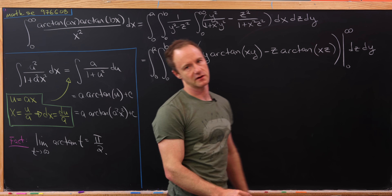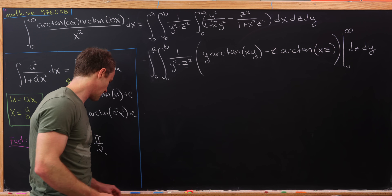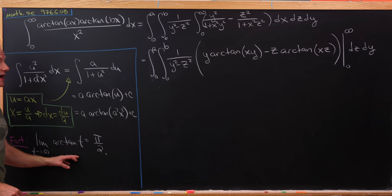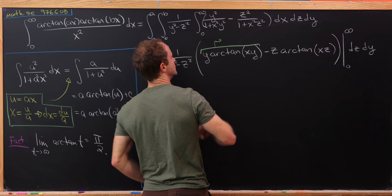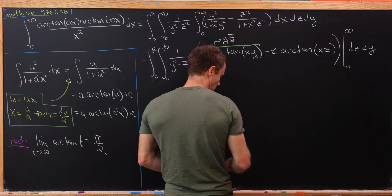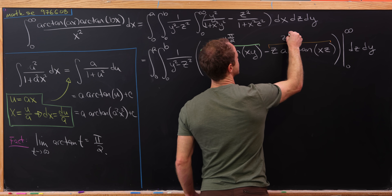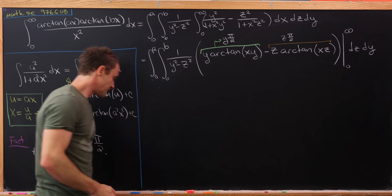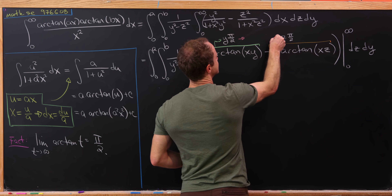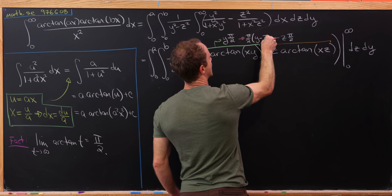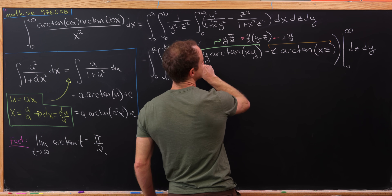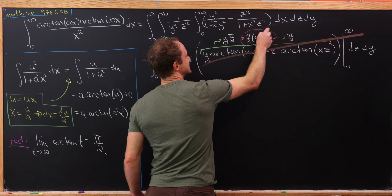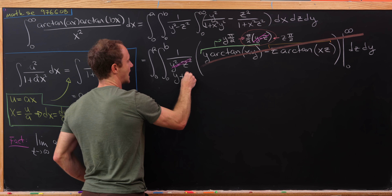Since y and z are both greater than 0, this limit applies. The first term turns into y times pi over 2, and the second term turns into z times pi over 2, using also the fact that arctan of 0 equals 0. Smashing these together we get pi over 2 times (y minus z). This (y minus z) cancels with the (y squared minus z squared) in the denominator, reducing it to (y plus z), and we still have the pi over 2 factor.